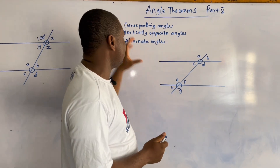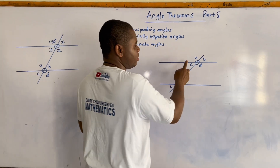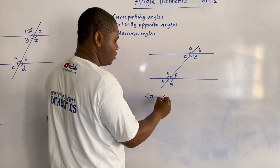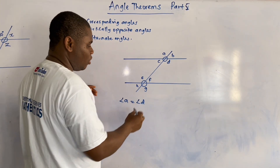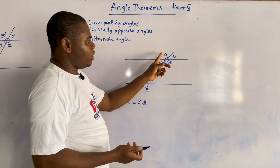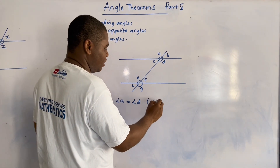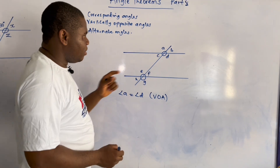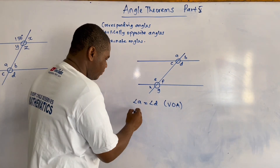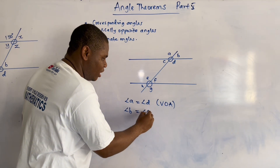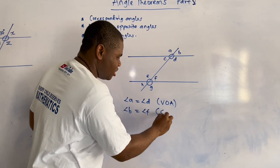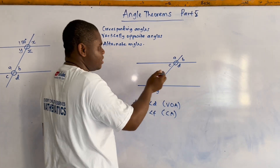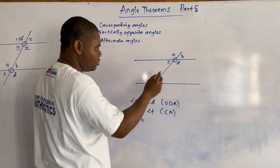We have this diagram here and we are going to use it to explain these three concepts. Angle A is equal to angle D — that is vertically opposite, so we can also call it X angles. For corresponding angles, angle B is equal to angle F because they are corresponding angles, and corresponding angles are equal.